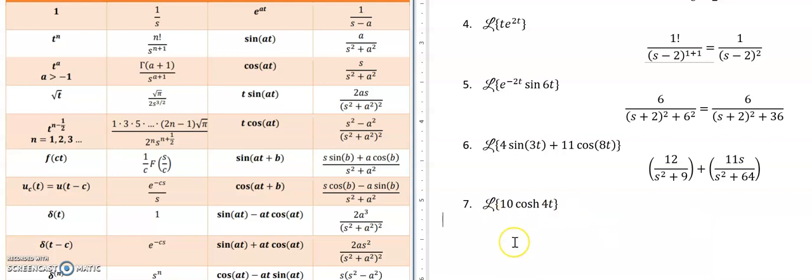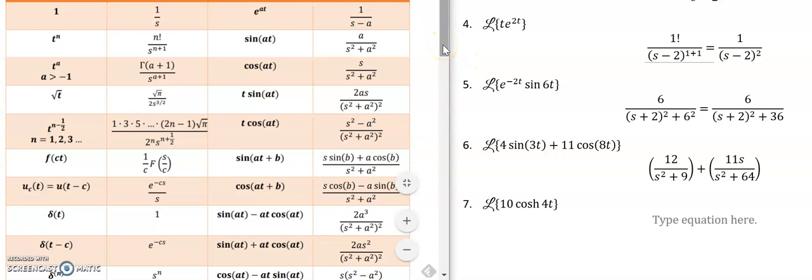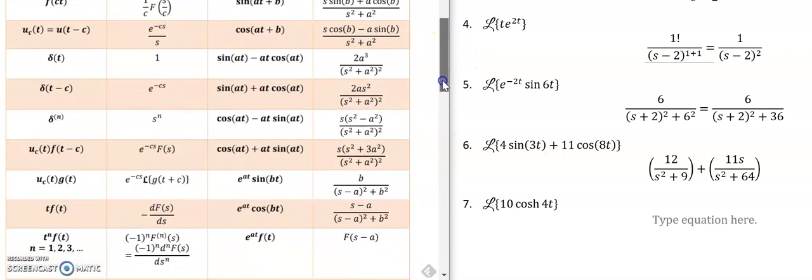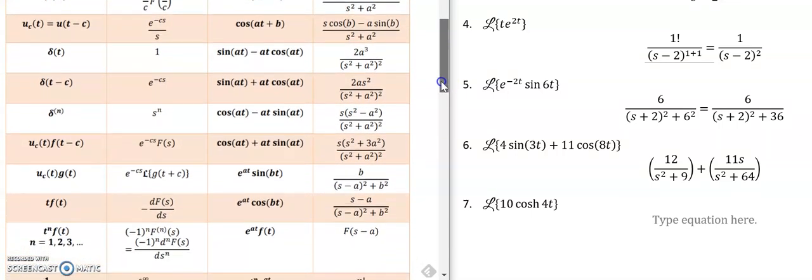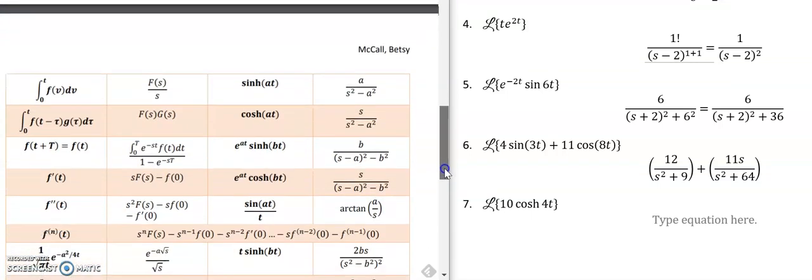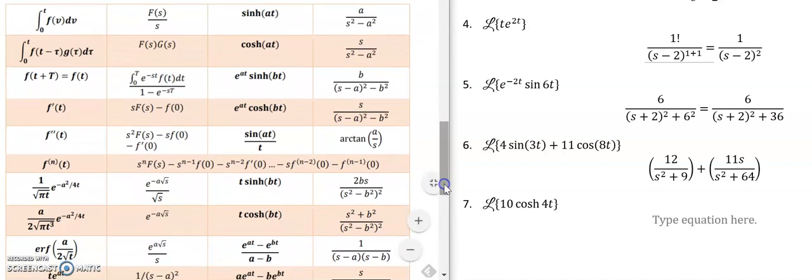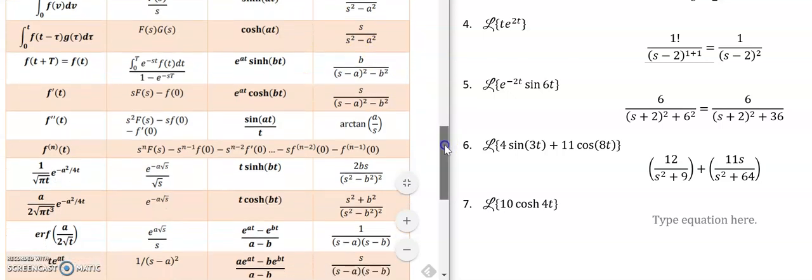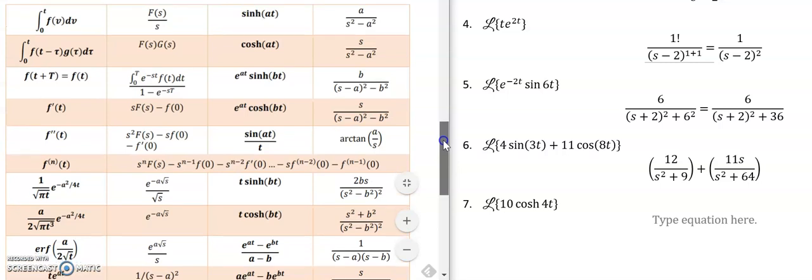And then the last example I just wanted to do, because sometimes it will save you a step in terms of completing the square or factoring. And so we're going to look down here, see if we have any cosh functions. Next page. Ah, here we have cosh and sinh. So again, depending on how comprehensive your table is, you may have other kinds of functions.